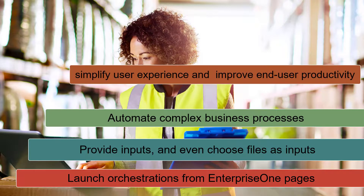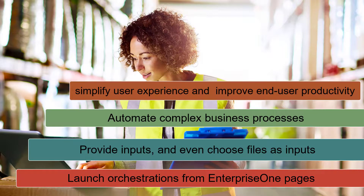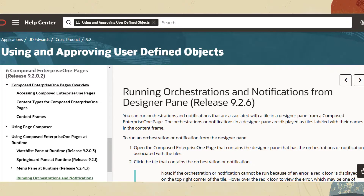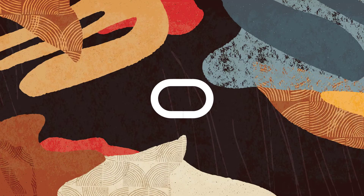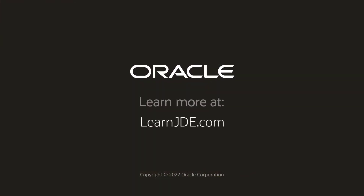The JD Edwards extensibility framework gives you tools to simplify user experience, automate processes, and improve end user productivity. Keep up with the fast-paced digital economy using the low-code, no-code tools available in your JD Edwards Enterprise One system. For more information about how to invoke orchestrations and notifications from Enterprise One pages, see Composed Enterprise One Pages in the JD Edwards Enterprise One Tools Using and Approving User-Defined Objects guide. To learn more, visit us at learnjdedwards.com. Thanks for watching.